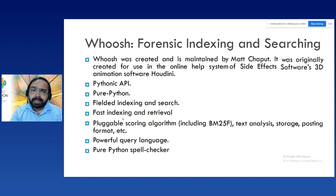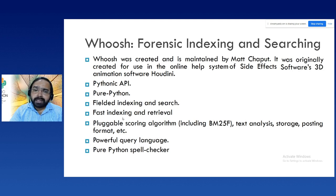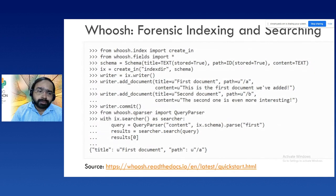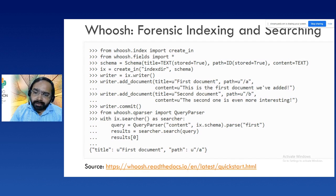For advanced indexing, there is a package called Whoosh, used for forensic indexing and searching. It was created and maintained by Matt and was originally created for the online help system of Side Effects Software's 3D animation software Houdini. It is a pure Python library that supports fielded indexing and search, fast indexing and retrieval, and a powerful query language. In simple terms, you are building a custom search engine: first adding all URLs to the system, then using the Whoosh query parser to find the required information.